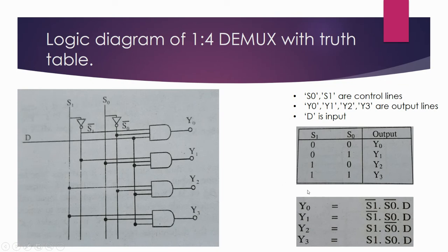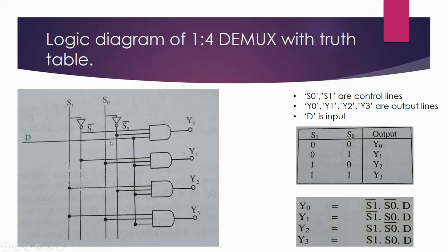Let's take another example: how to select Y3. When we have to select Y3, we provide 1 1 to both select lines. Pay attention on the cursor — this 1 is passed through to Y3. Both inputs of that AND gate are getting 1, so whatever value is present at this dot — which is connected to D — it will be passed through to Y3. So Y3 is selected.